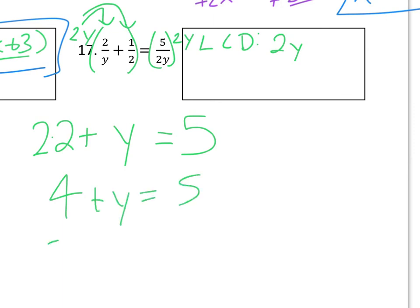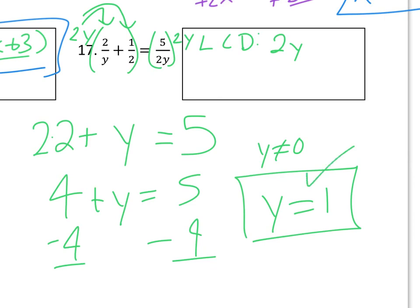It's really just a linear equation, so we subtract the 4 from both sides, and we end up with y equals 1. The extraneous solution would be 0. It doesn't really come into play here because we come up with a solution of 1 for this one. So hopefully this helped with solving these rational equations. Thanks for watching.